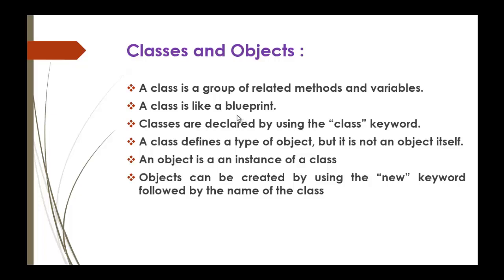Class is like a blueprint. We will see what this sentence means. Classes are declared using the class keyword. Suppose if you want to declare a class, you can declare it by using the class keyword. We will return to these last three points once we have declared the class and created an object. Now we will try to declare a class using the class keyword.